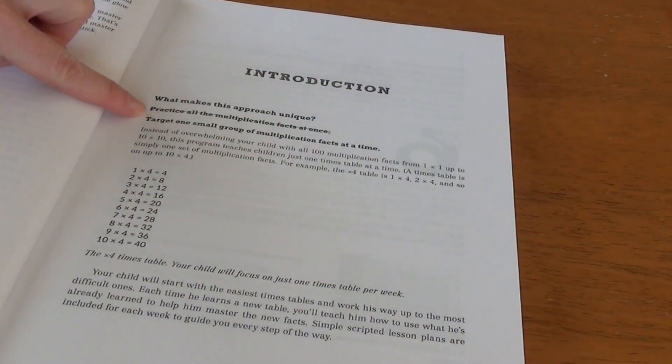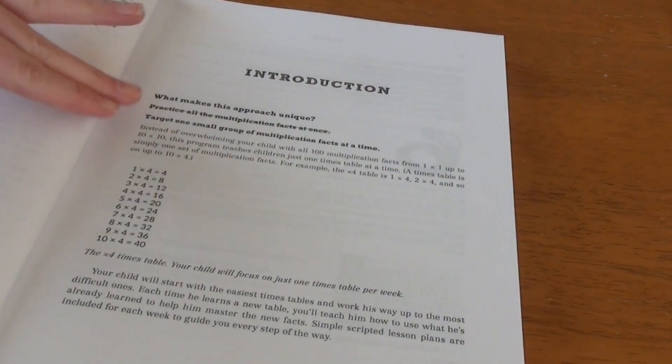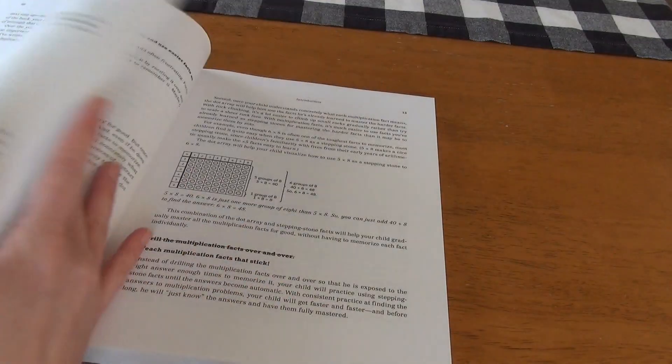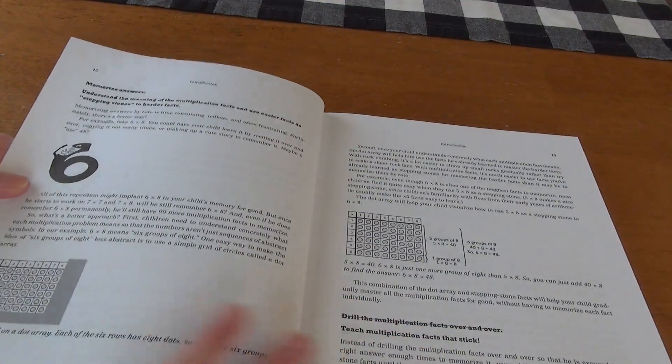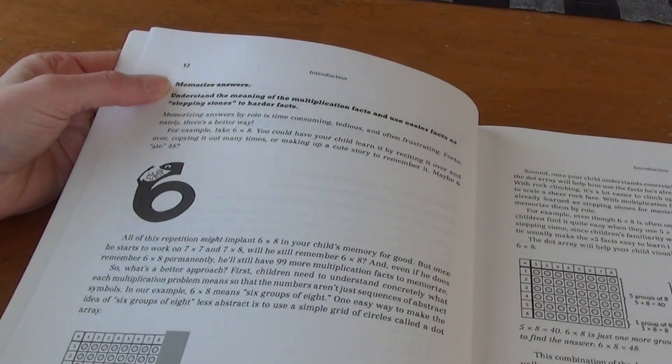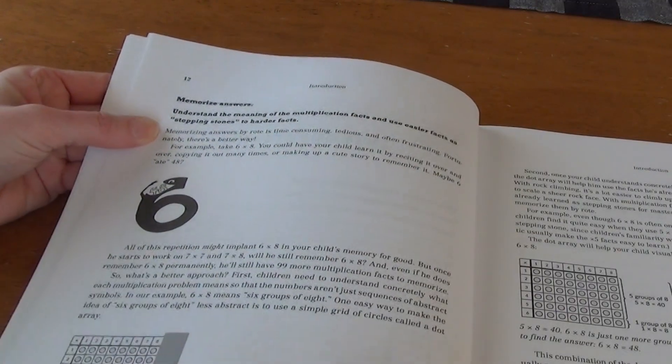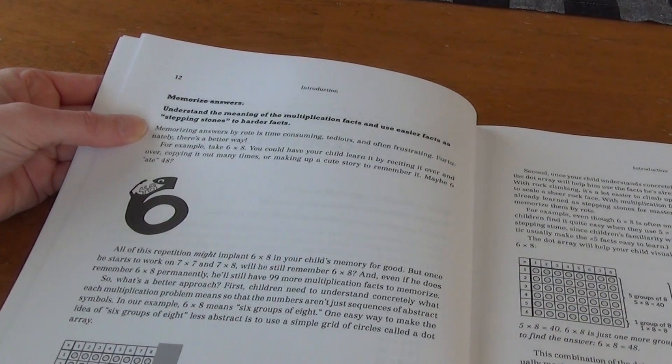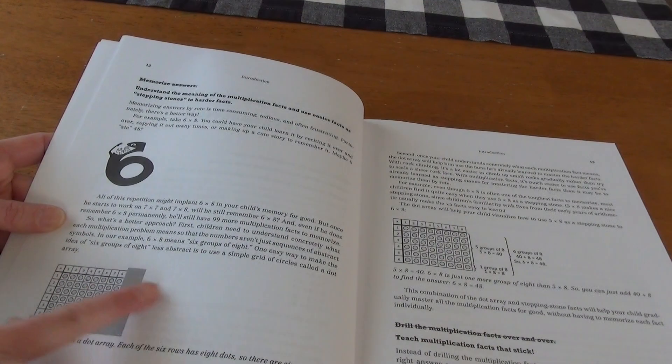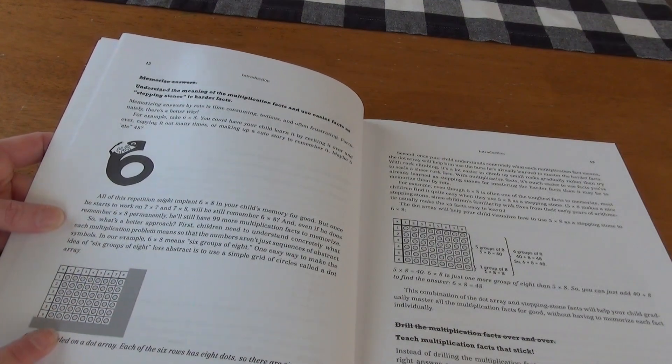She says, instead of practicing all the multiplication facts at once, you target one small group at a time. Like we saw by the weeks, we're only dealing with one fact per week, except for the first week. Another way that she says she is different is instead of memorizing the answers, they understand the meaning of the multiplication facts and use easier facts as stepping stones to harder ones.